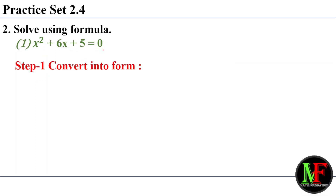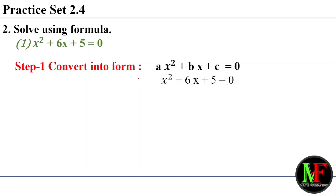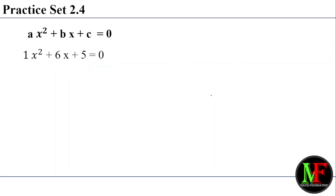Solution, step number 1: convert into standard form — ax squared plus bx plus c equal to 0. Our equation is x squared plus 6x plus 5 equal to 0. We compare it; all signs are positive. So the equation is x squared plus 6x plus 5 equal to 0.